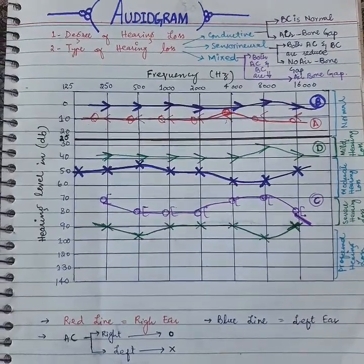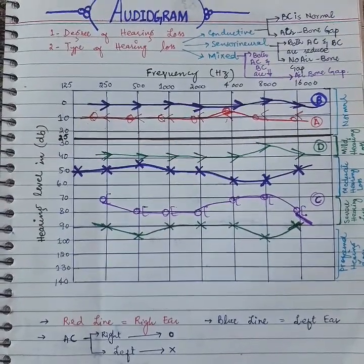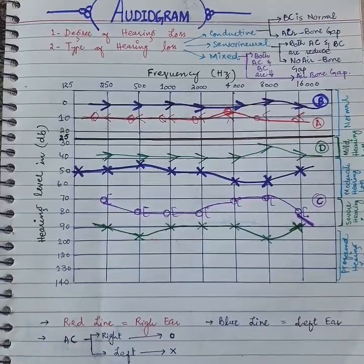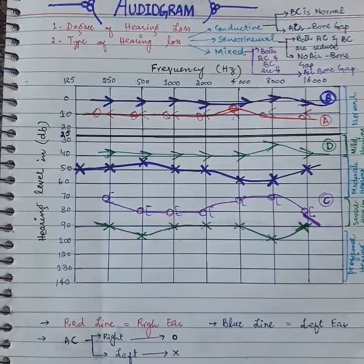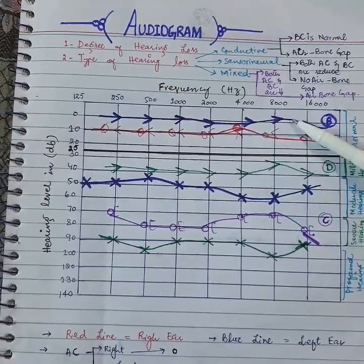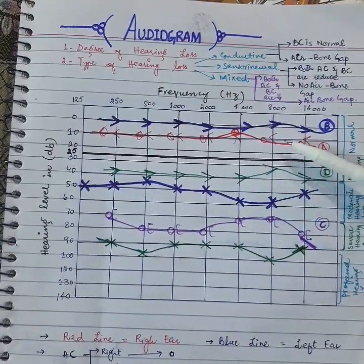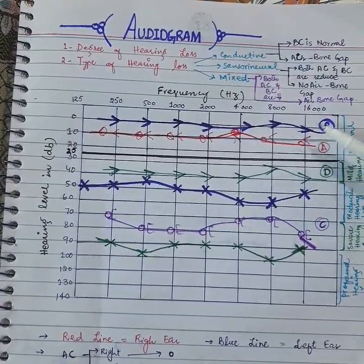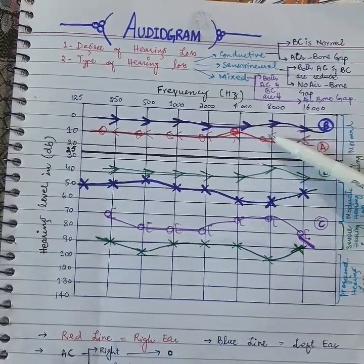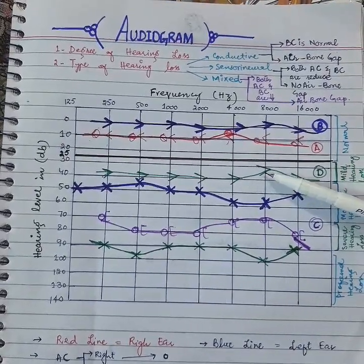For conductive hearing loss, two conditions should be fulfilled on the audiogram. Number one, there should be an air-bone gap, and number two, bone conduction should be normal. As you can see in the blue graph, there is a difference of almost 40dB between air conduction and bone conduction, and bone conduction is in the normal range, which is above 25dB. So both conditions are fulfilled — it is pure conductive hearing loss.